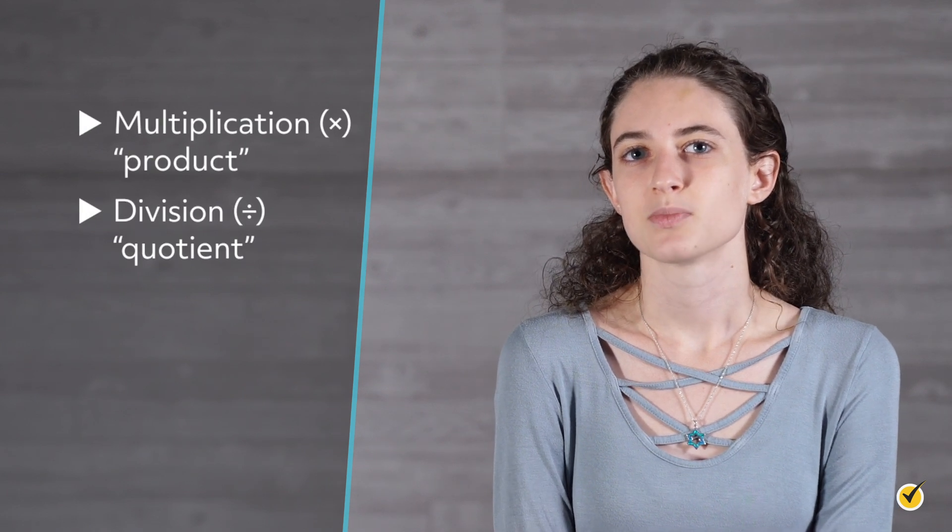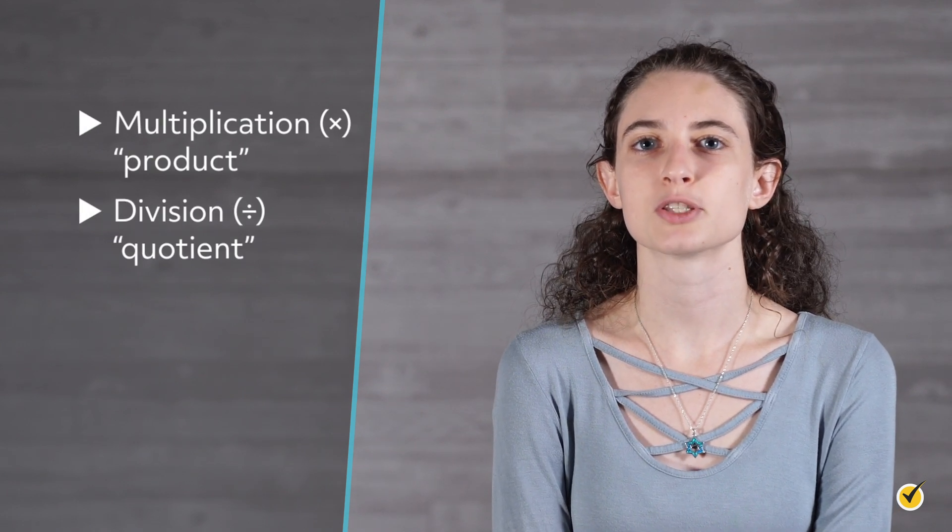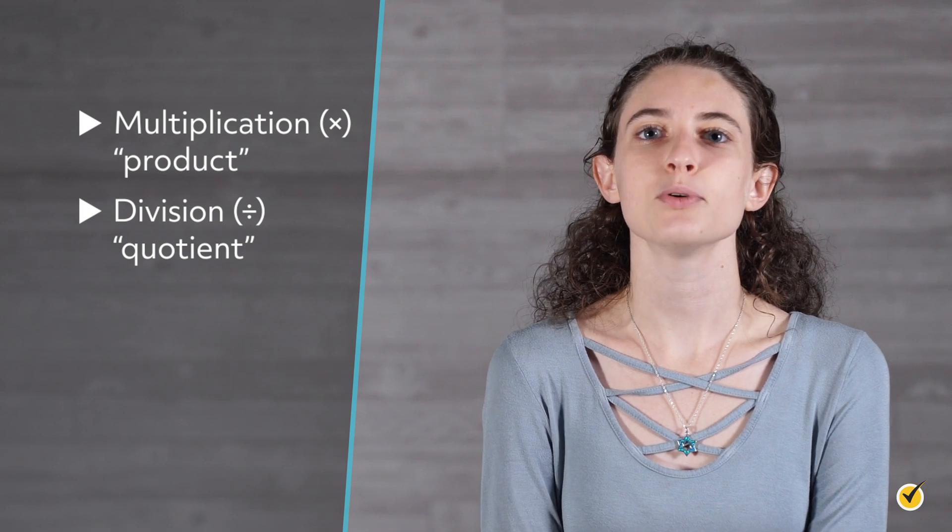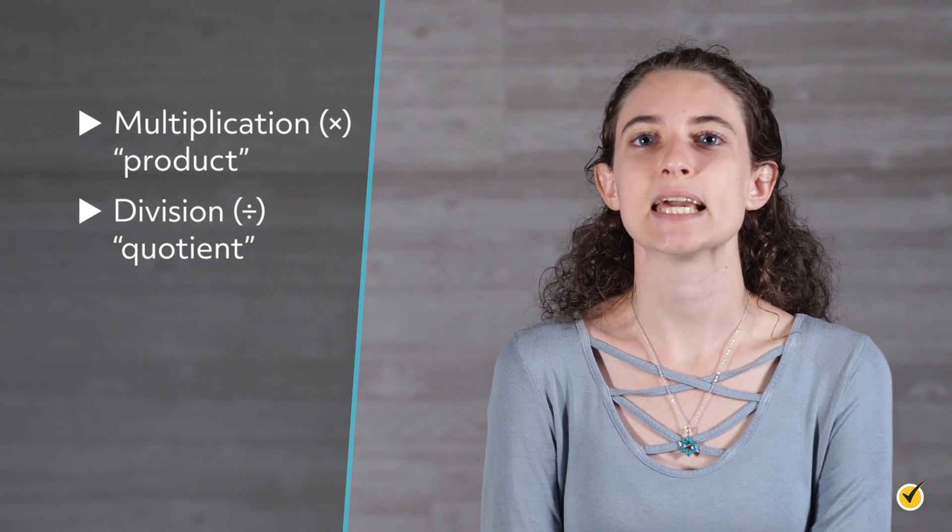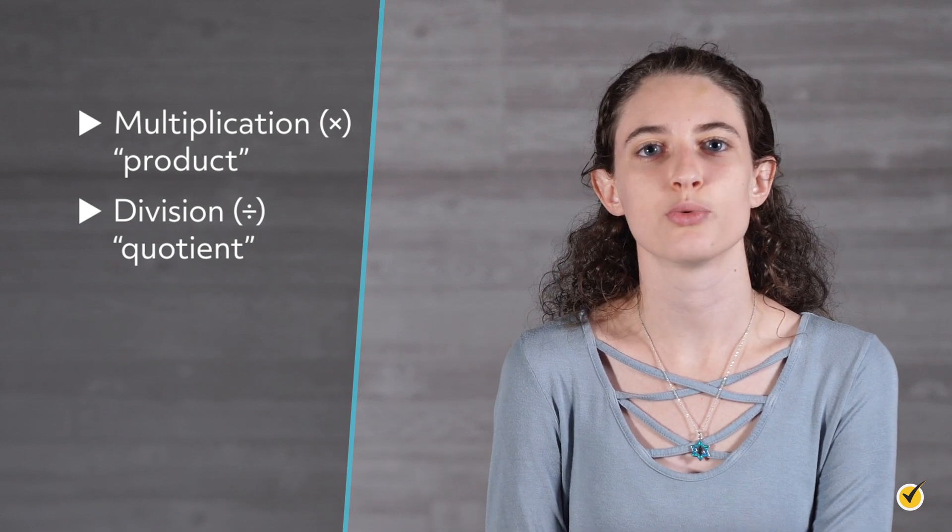As a reminder, the symbol we use for multiplication is a times sign. The answer to a multiplication problem is called the product. The symbol we use for division is a division sign, and the answer to a division problem is called the quotient.